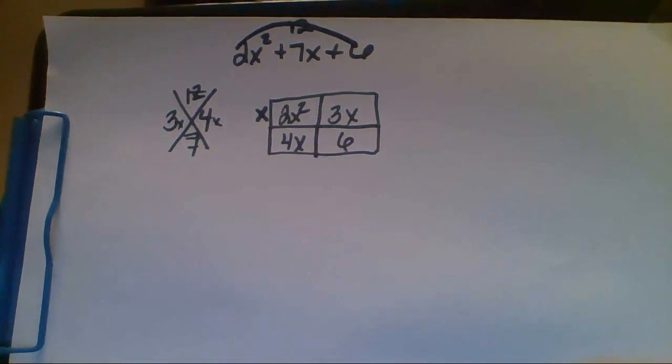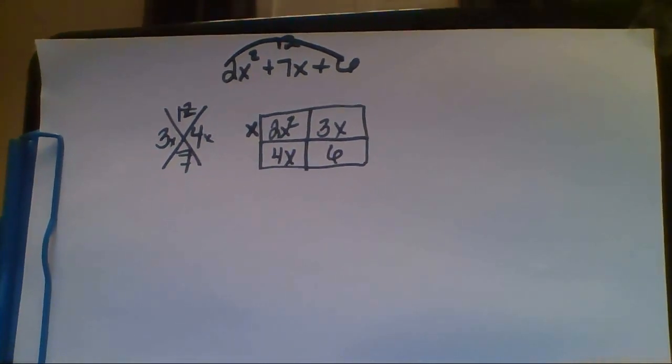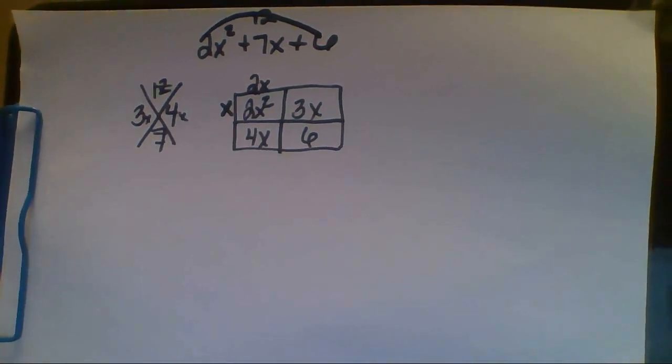Now let's look at the 2x squared. x times 2x is 2x squared. x times 3 is 3x.